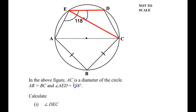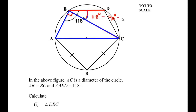In the question it was given that AC is the diameter of the circle, and we can see that the diameter AC forms an angle on the circumference at point E. So angle AEC is going to be 90 degrees by the angles in a semicircle theorem. This entire angle AED was given as 118 degrees, and the angle AEC is 90 degrees, so the remaining angle DEC is 118 minus 90, which gives us 28 degrees.